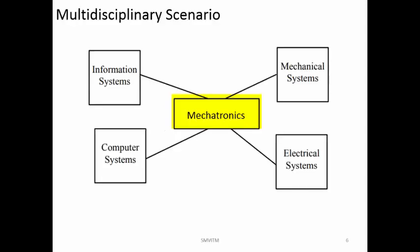Mechatronics is basically called a multidisciplinary system because if you want to design a mechatronics system, you should have knowledge about mechanical systems, because that is what we are trying to improve. We cannot improve by using purely mechanical means because controlling mechanical systems is very difficult and signal processing in mechanical is not very convenient. So we incorporate electrical and electronic components to improve the performance of mechanical systems.